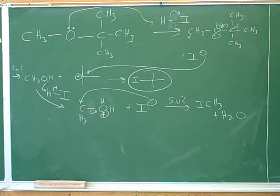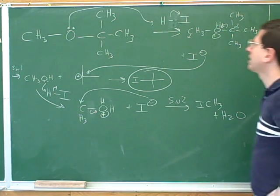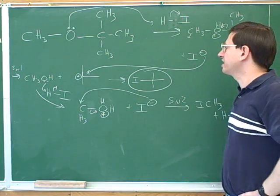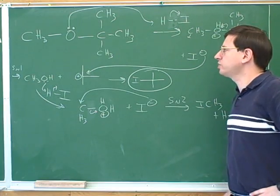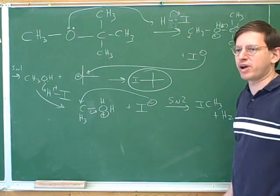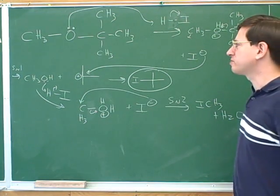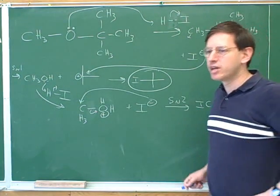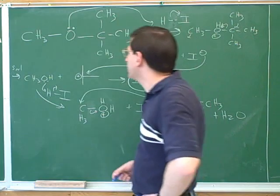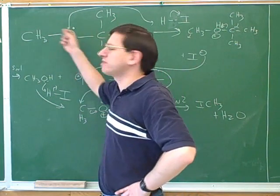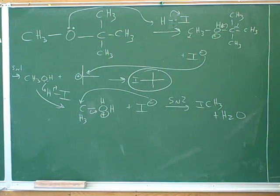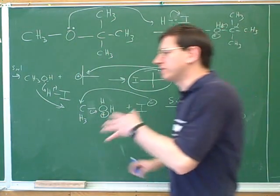In the previous example, when we had an acid attacking an ether, we ended up with two equivalents of the same product. But that was because we were attacking a symmetrical ether. Here we're attacking what we could call an asymmetrical ether with two different sides, so we would expect to get two different products.